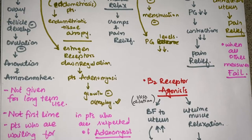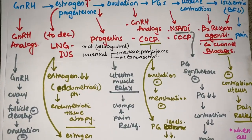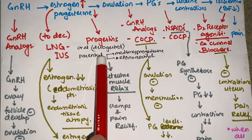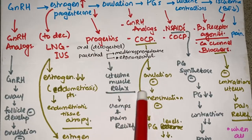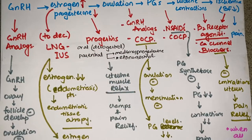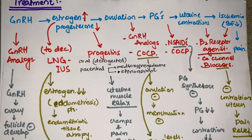Moving on to the progesterone option: progesterone, when present in high amounts, causes uterine muscle relaxation. Since the crampy lower abdominal pain is due to strong uterine contractions, giving synthetic progesterone relieves cramps and pain. Options include oral forms such as desogestrel, or parenteral forms such as medroxyprogesterone or etonogestrel.